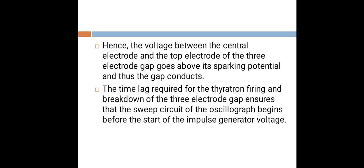Hence, the voltage between the central electrode and the top electrode of the three-electrode gap goes above its sparking potential and thus the gap conducts. The time lag required for the thyratron firing and breakdown of the three-electrode gap ensures that the sweep circuit of the oscilloscope begins before the start of the impulse generator voltage.